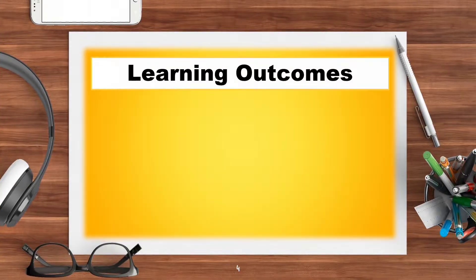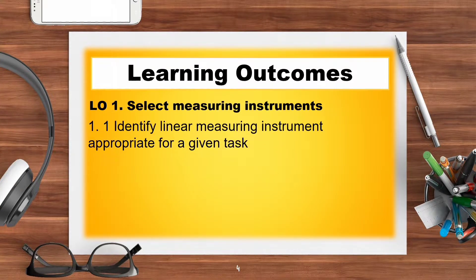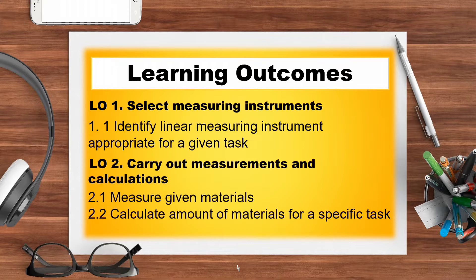Learning Outcome No. 1: Select Measuring Instrument. 1.1 Identify Linear Measuring Instrument appropriate for a given task. Learning Outcome No. 2: Carry Out Measurements and Calculations. 2.1 Measure Given Materials. 2.2 Calculate Amount of Materials for a Specific Task.